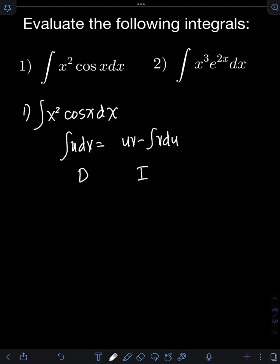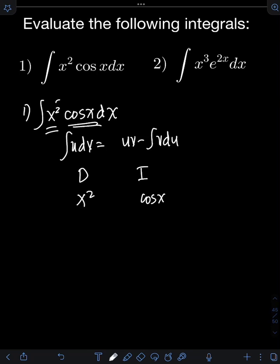Using the DI method, we will choose a function to be differentiated and a function to be integrated from the given integral. Let's prioritize the function that we can easily integrate. So it can either be cosine x or x squared — both can be integrated easily. I'll use cosine x for the function to be integrated and x squared for the function to be differentiated. On the side, we put alternating plus-minus signs, which we can extend depending on how many times we differentiate and integrate.